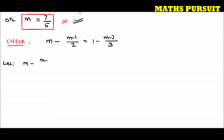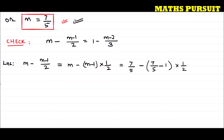Left-hand side is m minus (m minus 1) upon 2. I can write this as m minus (m minus 1) into 1 upon 2, since dividing by 2 is the same as multiplying by 1/2. Now let us replace the value of m with 7 upon 5: that gives 7 upon 5 minus (7 upon 5 minus 1) into 1 upon 2.